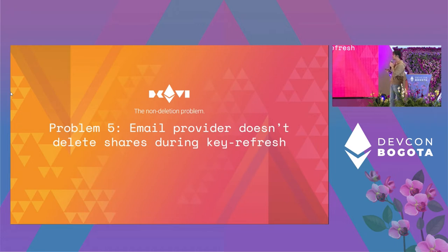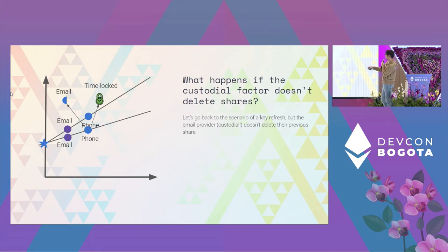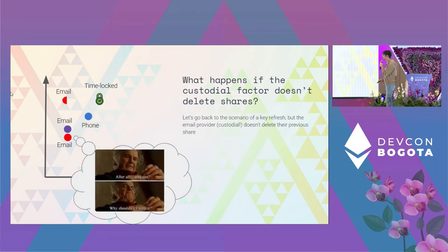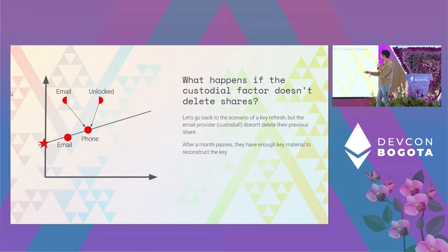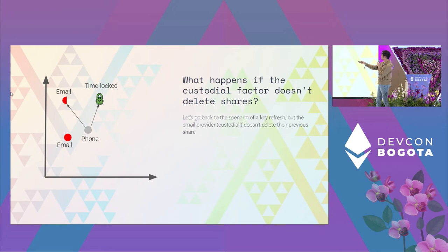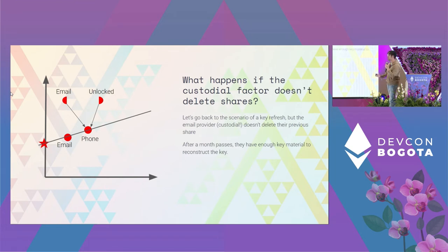But there's another problem: the email provider might not delete shares during key refresh. During key refresh, the email provider is supposed to discard old shares — but what if they don't and just keep the old email share? After a month passes, the time-lock share unlocks, and the custodian can reconstruct the phone share from the previous polynomial and recover your key. So even though you refreshed your shares, if the custodian doesn't delete, they can still steal your key when the time-lock expires.